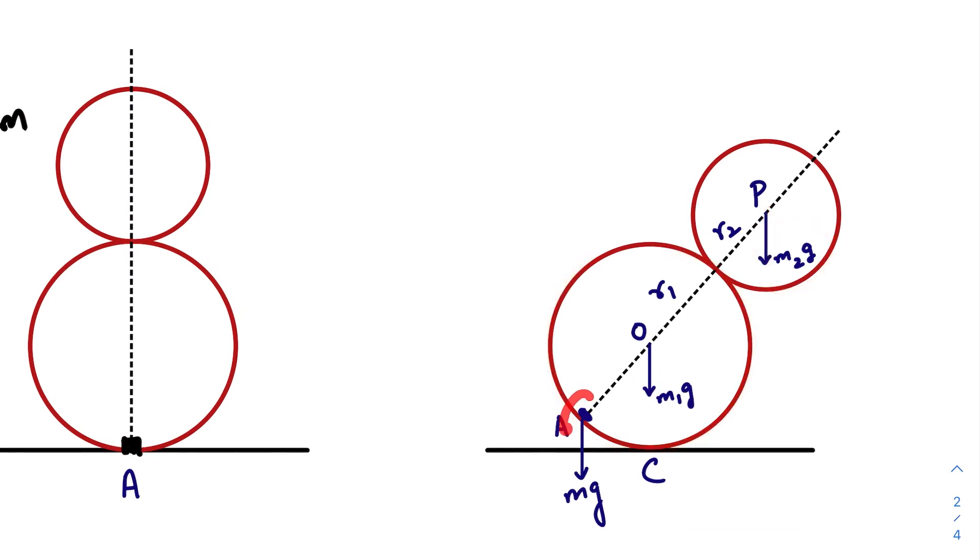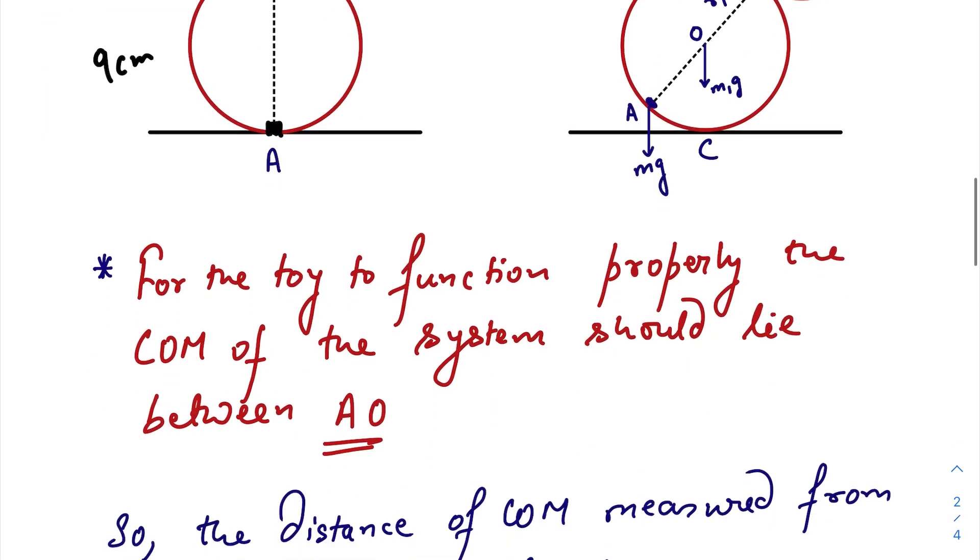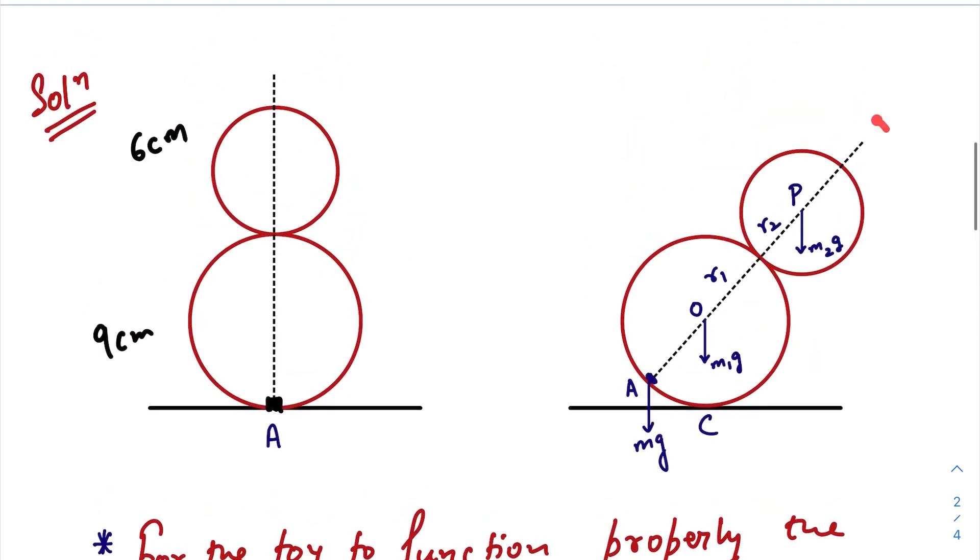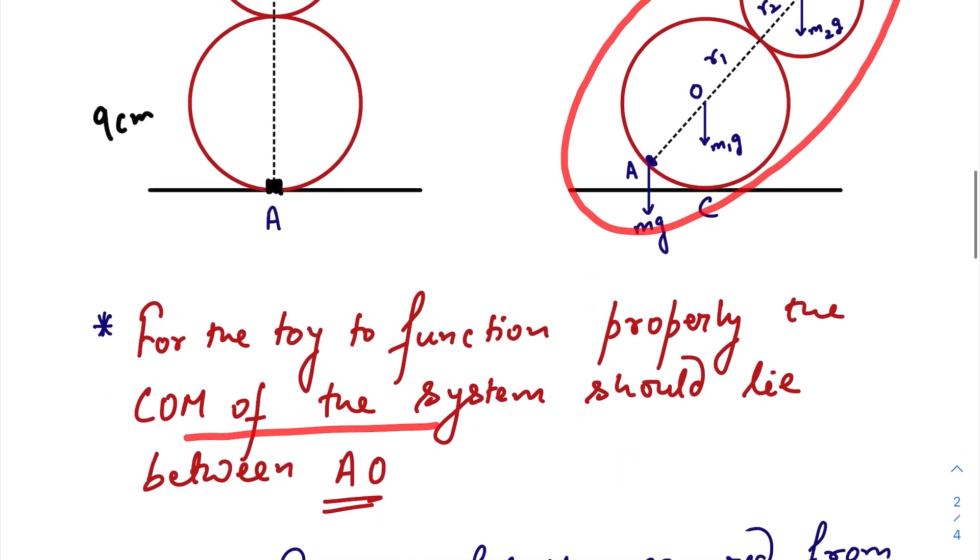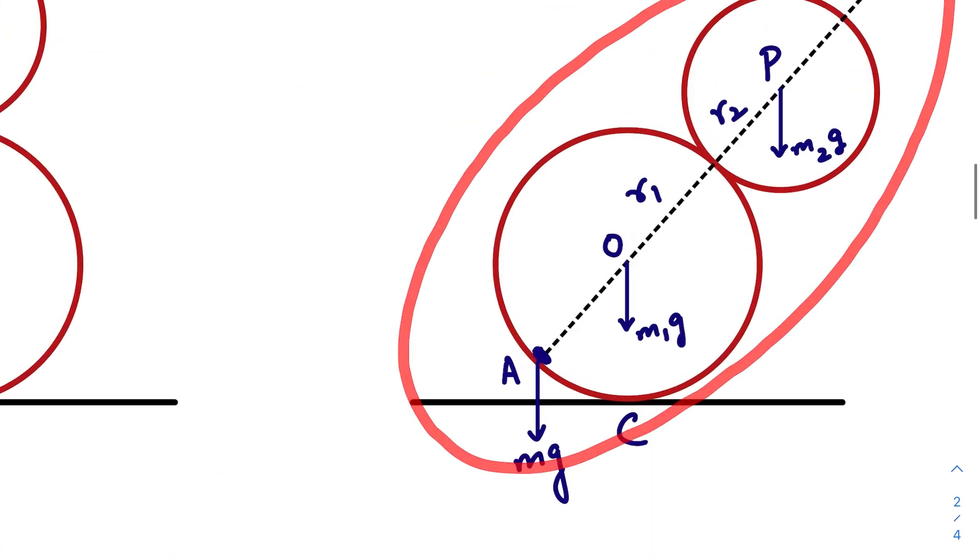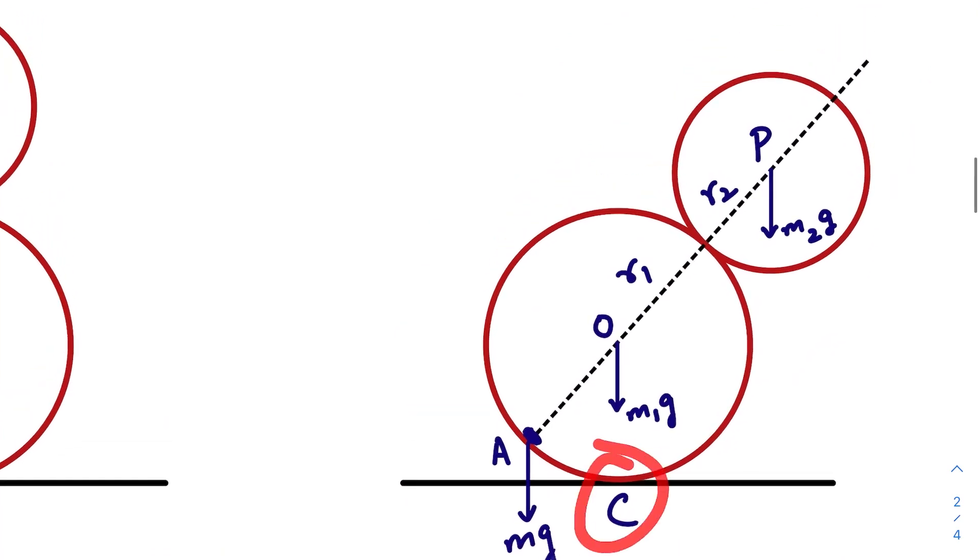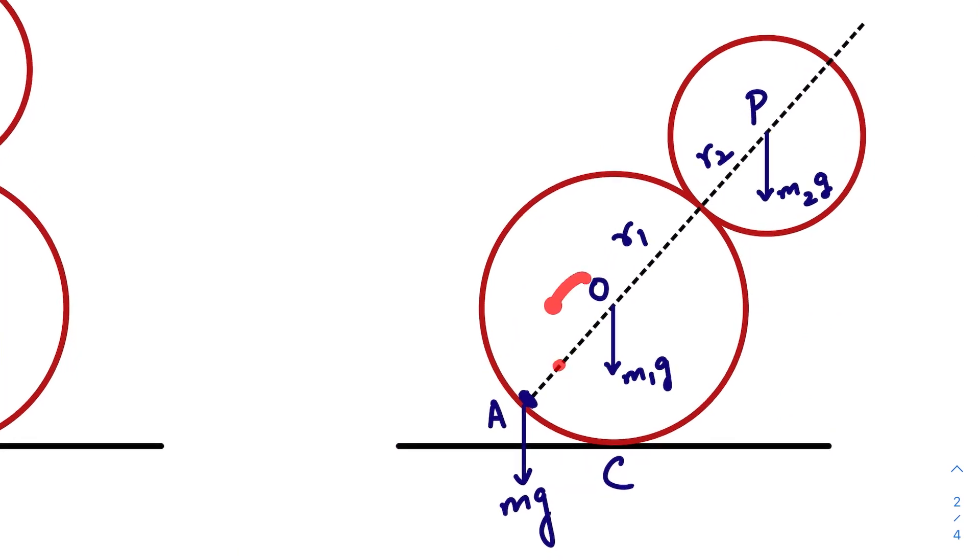So here is the weight of this mass, here is the weight of this mass, and at this point the weight of the load will act. For the toy to function properly, the center of mass of this whole system should lie at the left side of the pivot point.